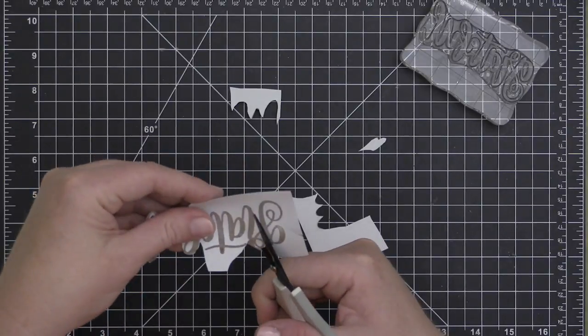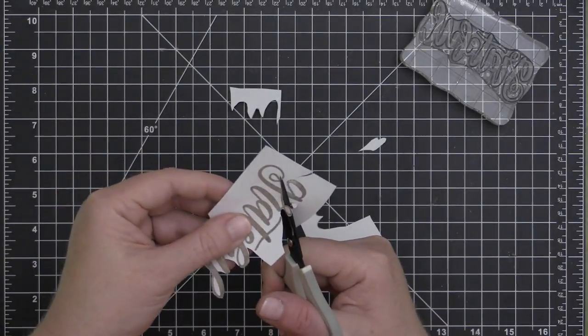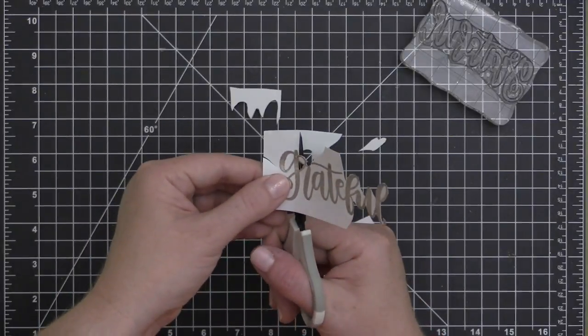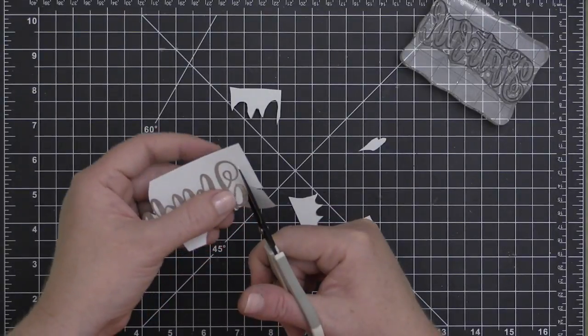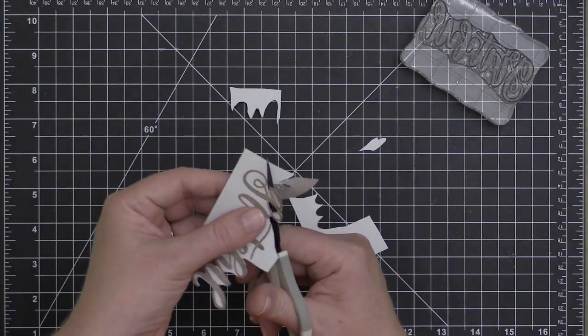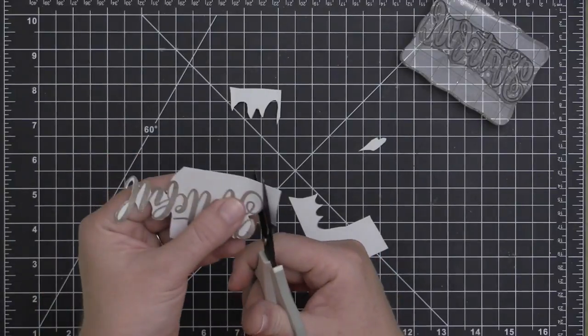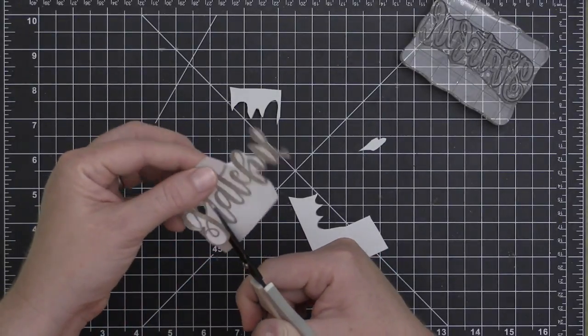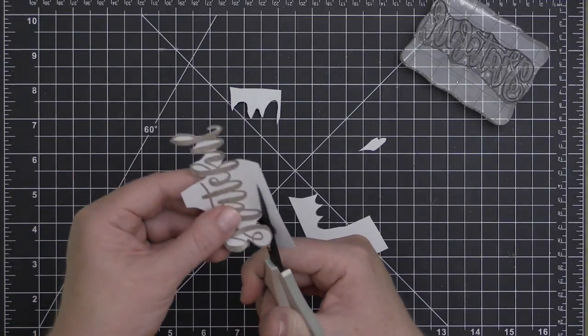I am not going to stamp over the center part of the sentiment, so I'm only cutting out the two ends of this sentiment to save myself a little bit of time. You can definitely do this with stamps that have coordinating dies, but the dies are usually a little bit larger than the stamps, so you will end up with a halo around that stamped image.